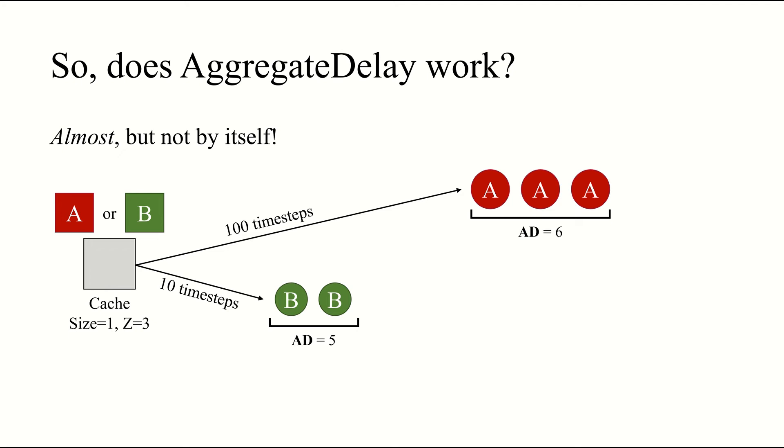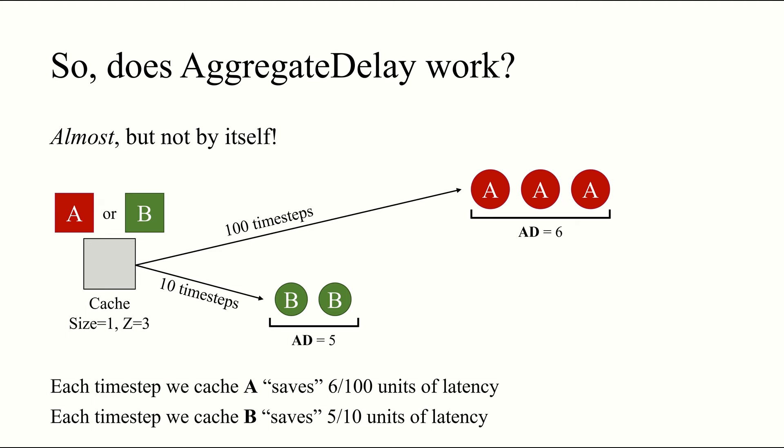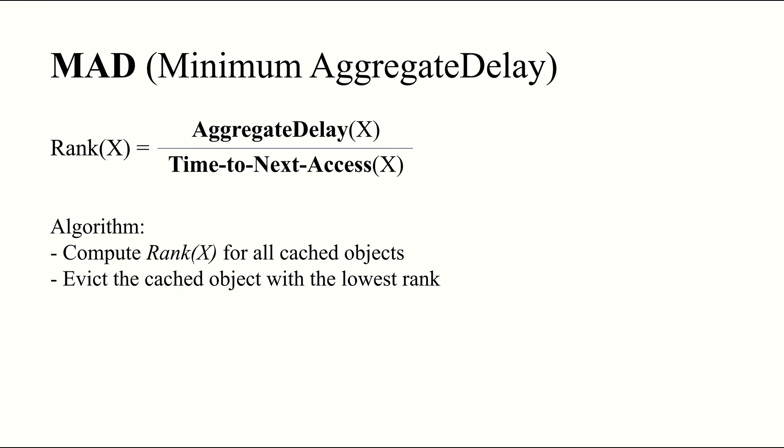Consider this example, where we have a cache of size 1, and our Z parameter is 3. We need to decide between these two objects, A and B. A has an aggregate delay of 6, and is used 100 timesteps in the future, while B has an aggregate delay of 5, and is used just 10 timesteps in the future. So, which of these should we cache? Well, every timestep that we choose to cache A saves us 6 over 100 units of delay. On the other hand, every timestep that we choose to cache B saves us 5 over 10 units of delay. So, it seems like caching B is a better idea, despite the fact that A has higher aggregate delay. This tells us that our online algorithm should not only account for aggregate delay, but also the time until this object is reused again.